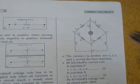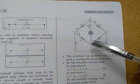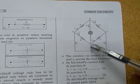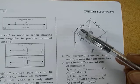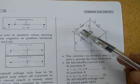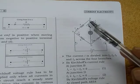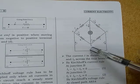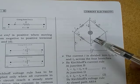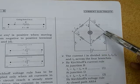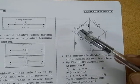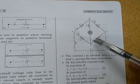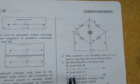Applying Kirchhoff's First Rule at junction D: currents I₂ and Iɢ are entering the junction, but current I₄ is leaving. So we write: I₂ + Iɢ − I₄ = 0.